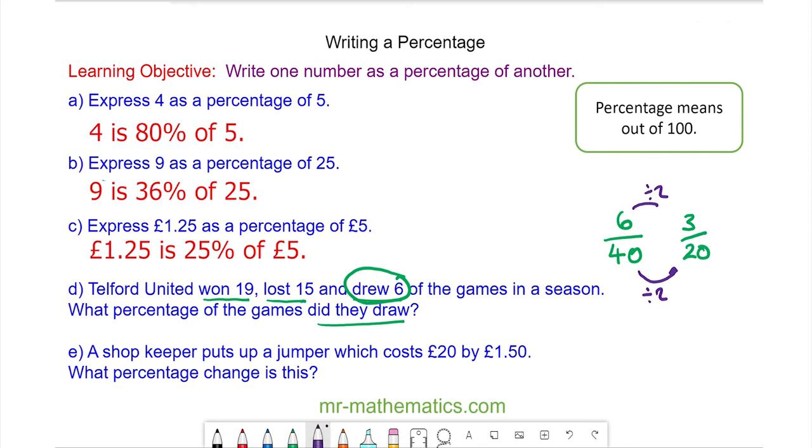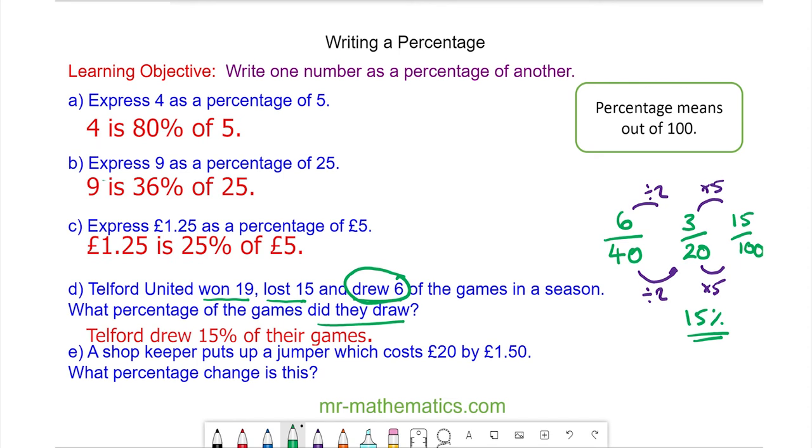And now we times both by 5, because 20 goes into 100 five times. So we have 15 over 100, which is 15%. They drew 15% of their games.